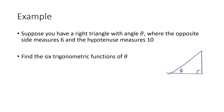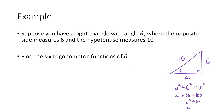So there's the right angle, there's theta, the opposite side measures 6, the hypotenuse measures 10, and we want to find the six trigonometric functions of theta. What we're missing is the adjacent side, little a. The Pythagorean theorem tells us a squared plus b squared equals c squared, which in this case is a squared plus 6 squared equals 10 squared. So a squared plus 36 equals 100, giving a squared equals 64. Since a is a distance it can't be negative, so a equals 8.